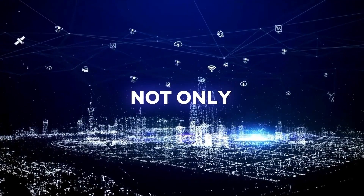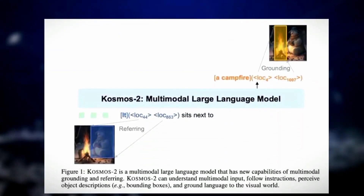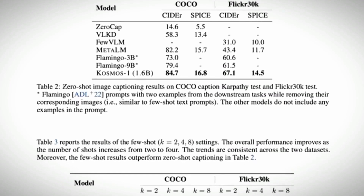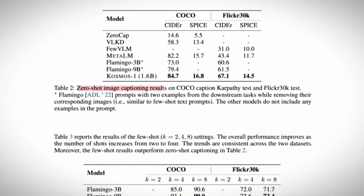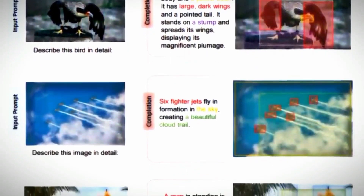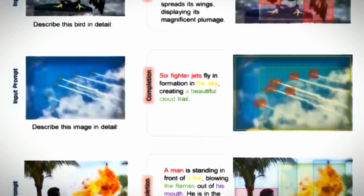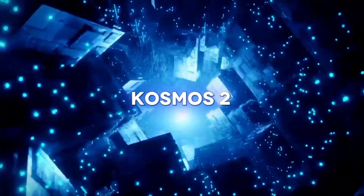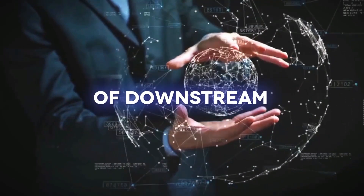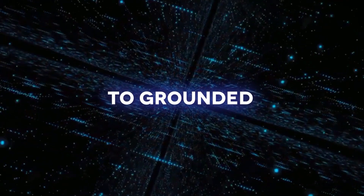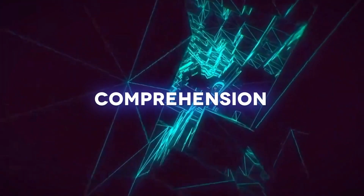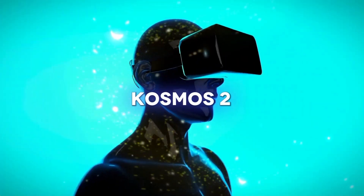So now Cosmos 2 can not only predict the next word in a sequence, but can also locate specific regions within images. Unlike previous multimodal models that could only provide text outputs, Cosmos 2 can ground its text output to the image, giving you a more accurate, informative, and comprehensive response. Cosmos 2 isn't limited to specific tasks either — it can be utilized in a wide range of downstream applications, from grounded image captioning to grounded visual question answering, or VQA, and even referring expression comprehension and generation.